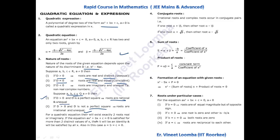In some cases, a quadratic equation is satisfied for more than two distinct values of x — such an equation is called an identity. For an identity, we use the property that a = b = c = 0, meaning the coefficients of all terms, including the constant term, are equal to zero.